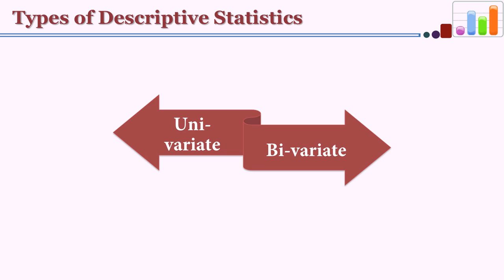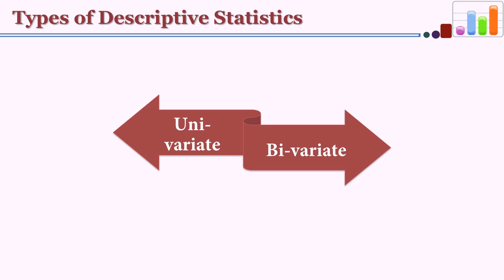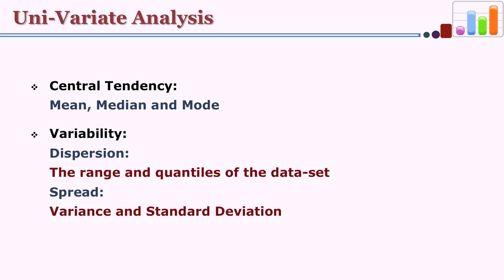When there is only one variable, this statistics is called univariate. When there are more than two variables we call it bivariate analysis. In univariate analysis, the statistics used can be listed as central tendency, variability, the shape of a distribution, and the characteristics of a variable distribution in graphical or tabular form. For central tendency, the three measures generally used are mean, median, and mode.